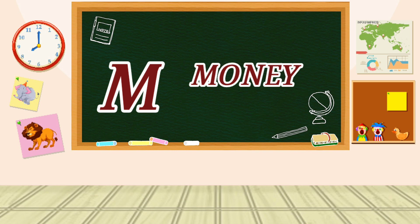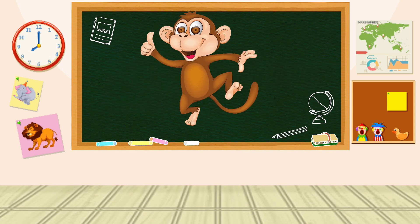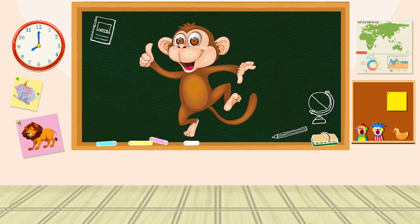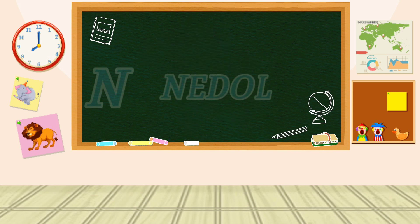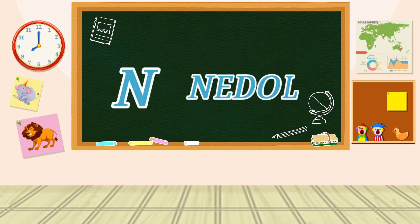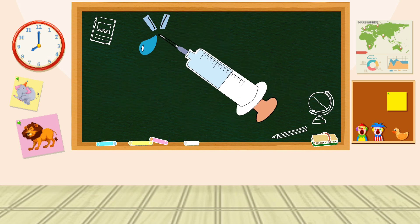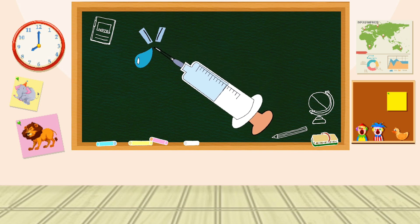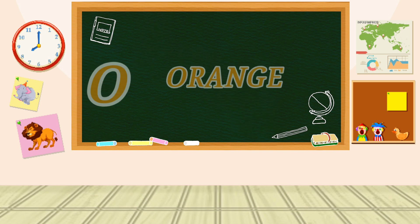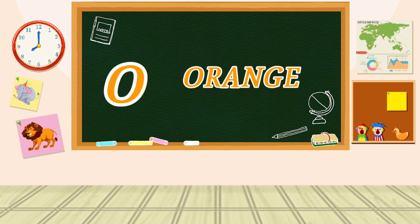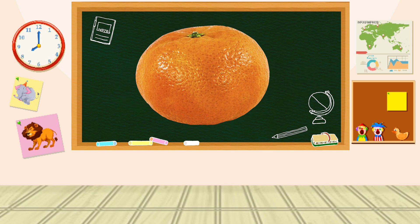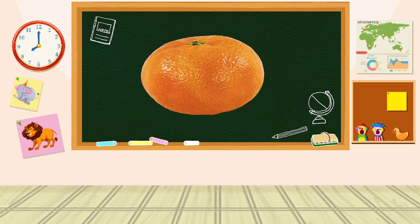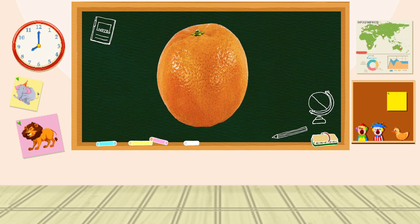M is for Monkey. M-Monkey, M-Monkey, M-Monkey. N is for Needle. N-Needle, N-Needle, N-Needle. O is for Orange. O-Orange, O-Orange, O-Orange.